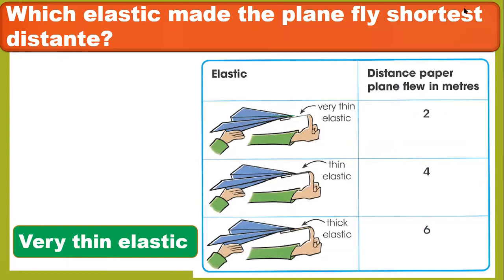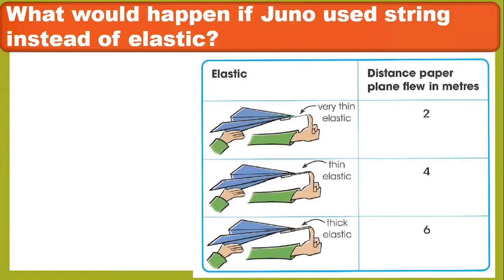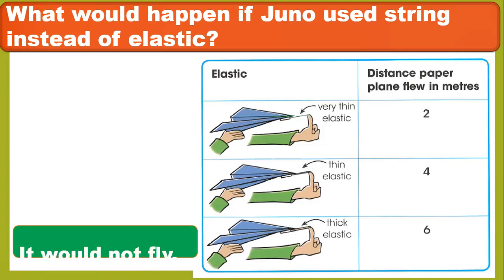The thin elastic gives the shortest distance because you can't stretch it as much. What would happen if Jenna used string instead of elastic? String can't be stretched — it's not elastic — so the plane will not fly.